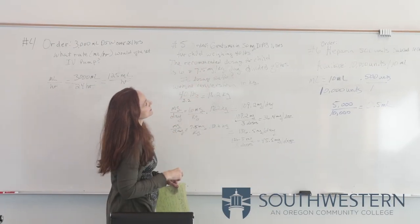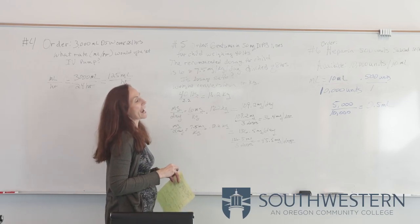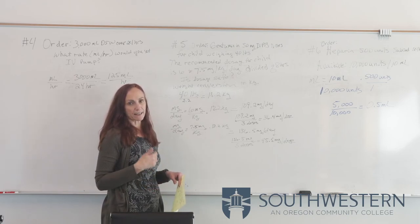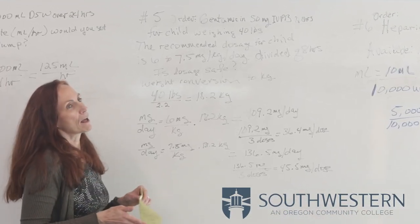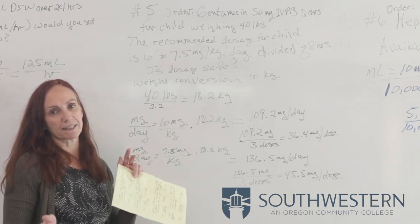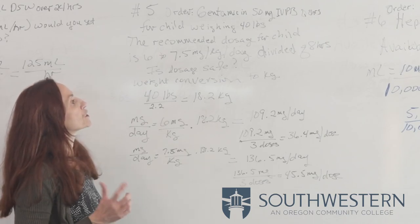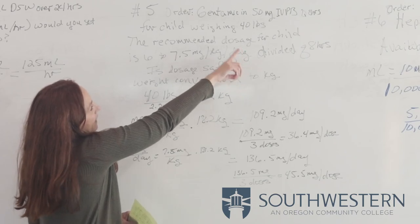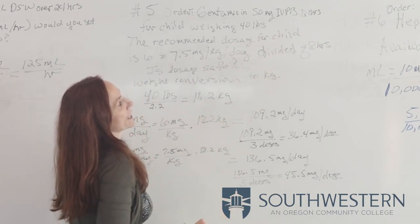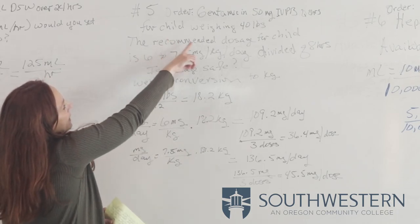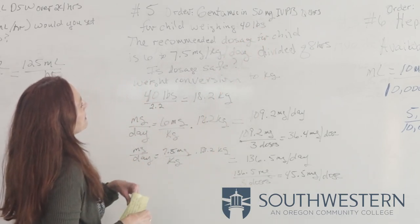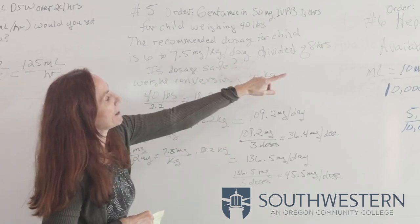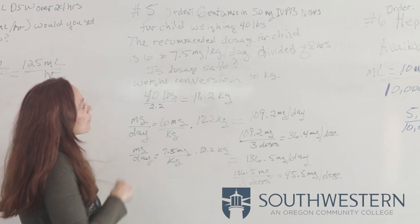The next order is a piggyback, and what's significant is that it's a pediatric dose. With pediatrics, doses are always based on the child's weight in kilograms. For many antibiotics and other medications, the pharmacist will provide a safe range. The order is gentamicin 50 milligrams IV piggyback every 8 hours for a child weighing 40 pounds. The recommended dose is 6 to 7.5 milligrams per kilogram per day, divided every 8 hours.